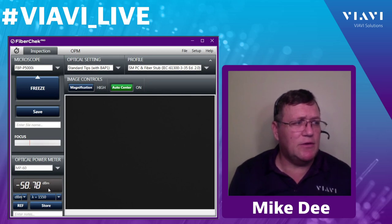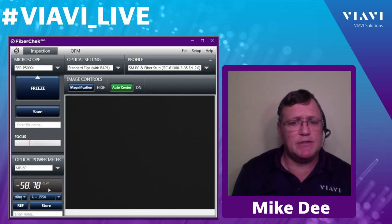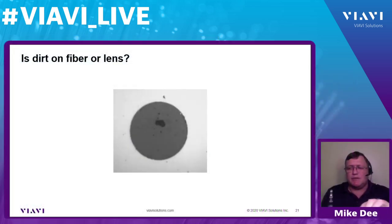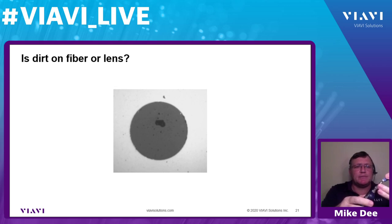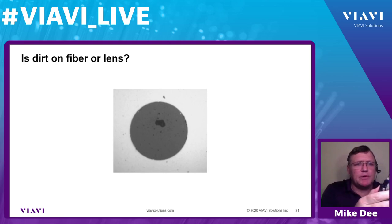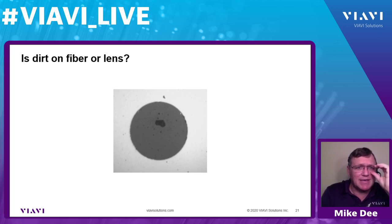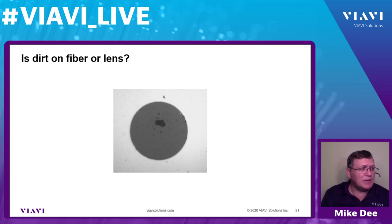How do you know if dirt is on the fiber or on the lens of the camera? Simple test: plug a jumper in and spin it. If the dirt moves, it's on the jumper. If the dirt does not move, it's on the camera lens. With most probes, remove the tip, and there's a lens inside — wipe it with an optical wipe and your scope is clean. Also, if you're inspecting multiple fibers and see the exact same piece of dirt in the same position on 10 fibers in a row, that's a clue the dirt may be on your camera rather than on the fibers.